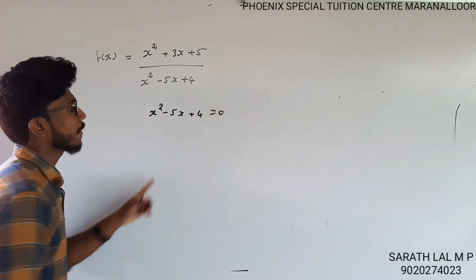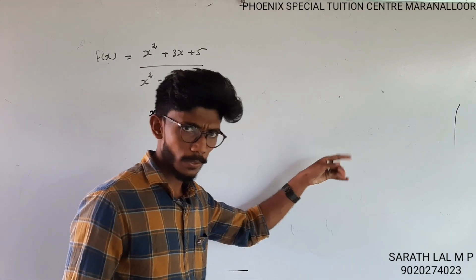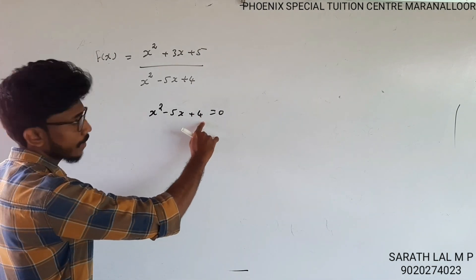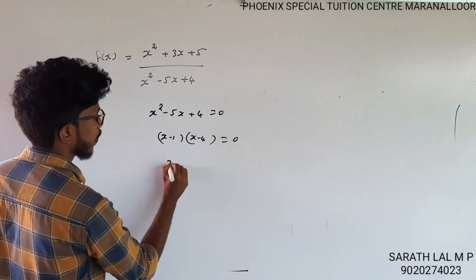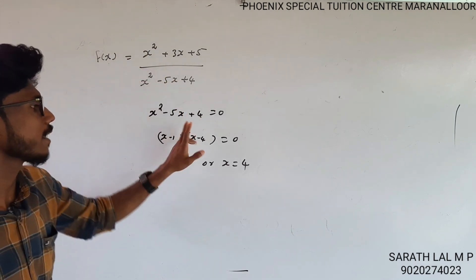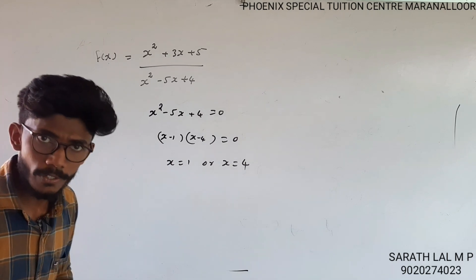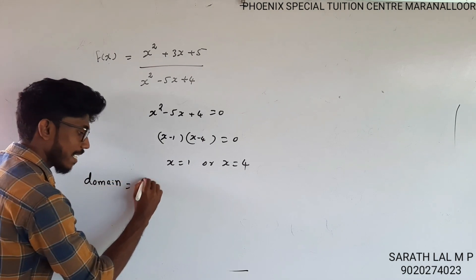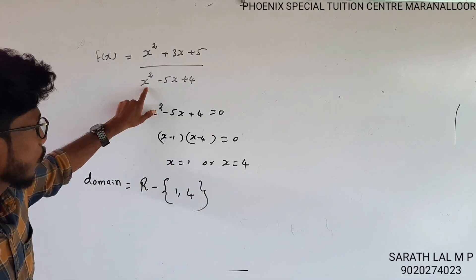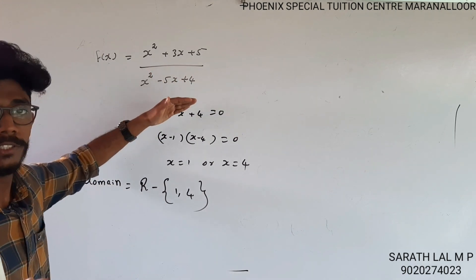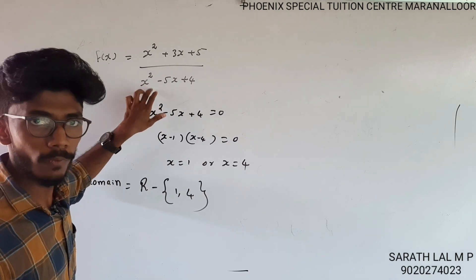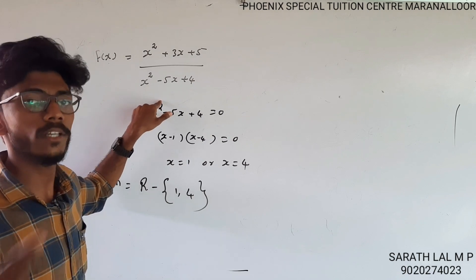x² - 5x + 4 equals 0. So use the formula — split in the middle: x² - 5x + 4 factors as (x-1)(x-4) equal to 0, so x equal to 1 and x equal to 4. If the denominator is zero at x=1 and x=4, the answer is not defined.